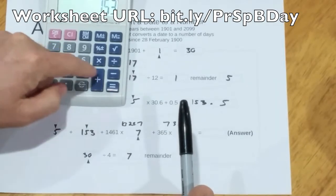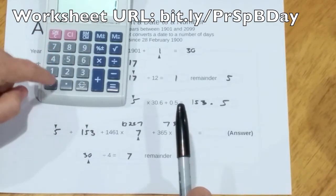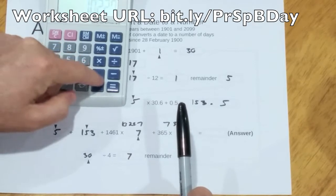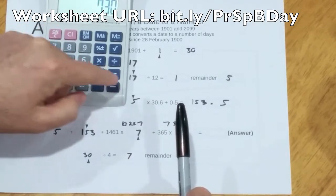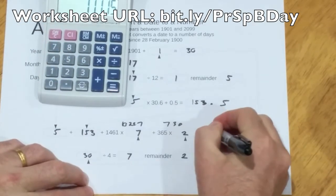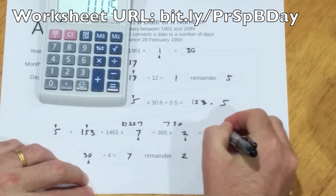5 plus 153 plus 10,227 plus 730 is 11,115.